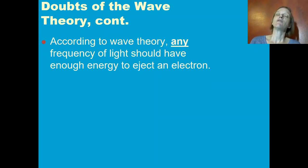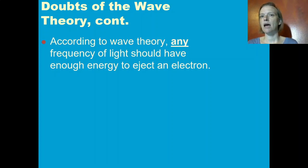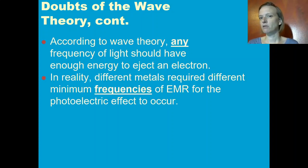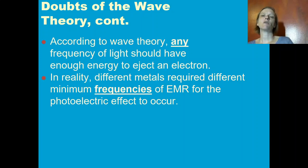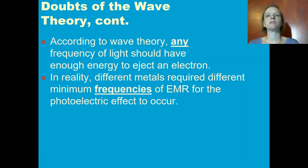If the wave theory of light was true, then any frequency of light should be able to eject electrons from the metal. However, scientists observed that different metals required different minimum frequencies — different wavelengths of light, different frequencies of light —